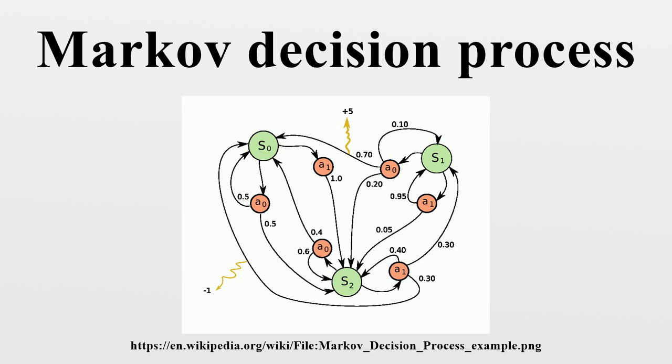More precisely, a Markov decision process is a discrete time stochastic control process. At each time step, the process is in some state, and the decision-maker may choose any action that is available in that state. The process responds at the next time step by randomly moving into a new state and giving the decision-maker a corresponding reward.